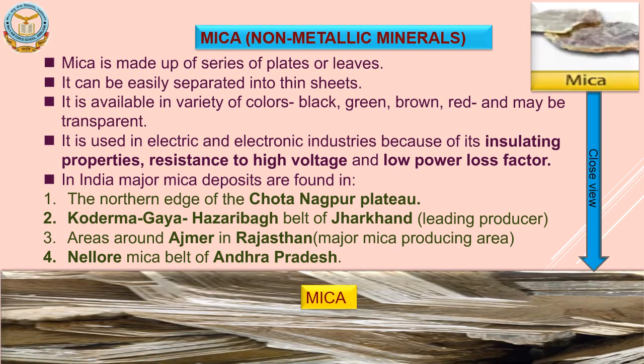India is the largest producer and exporter of mica in the world. Micas are fairly light and relatively soft minerals made up of a series of plates or leaves, and their sheets and flakes are flexible and can be easily separated into thin sheets. It is available in a variety of colors including purple, black, green, brown, red, and may be transparent. It is used in paints as a pigment extender, and because of its insulating properties, resistance to high voltage and low power loss factor, it is used as thermal insulation and electrical insulators in electronic equipment. Its shiny and glittery appearance makes it popular for toothpaste and cosmetics.